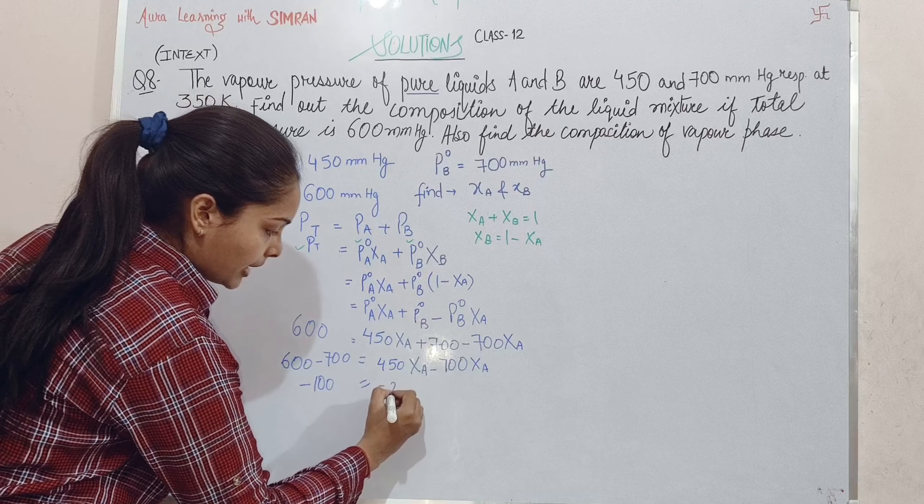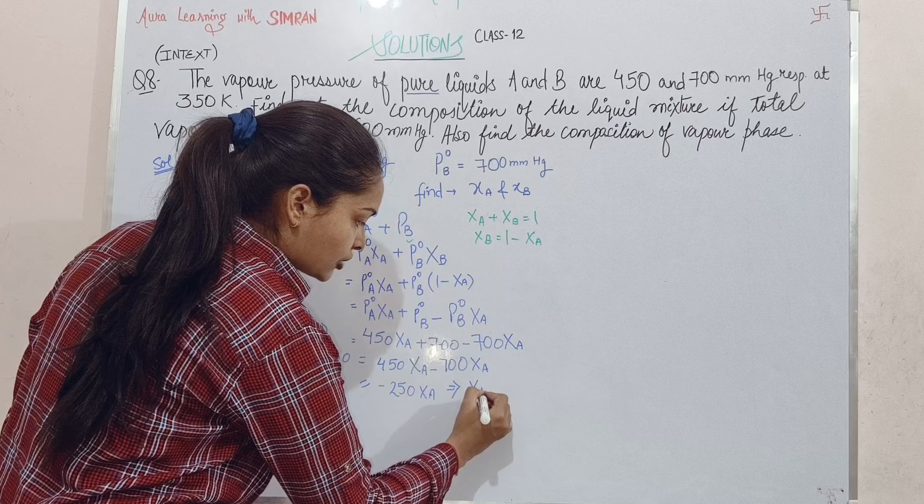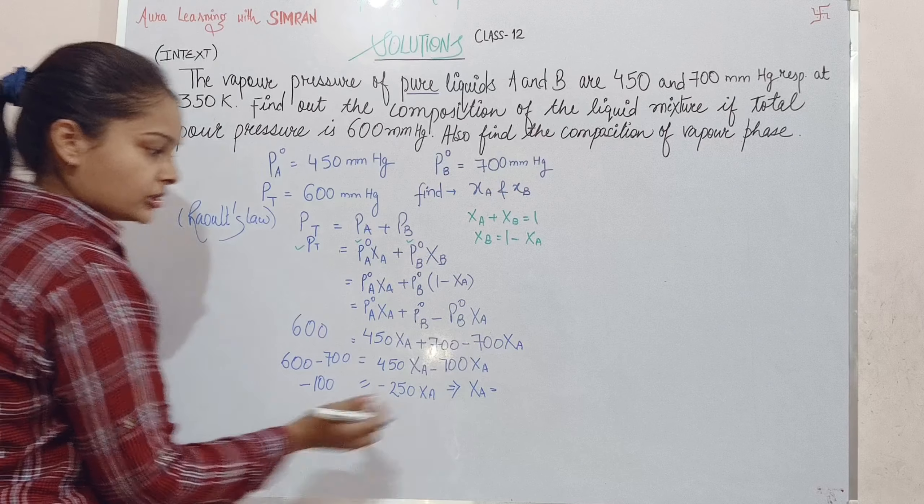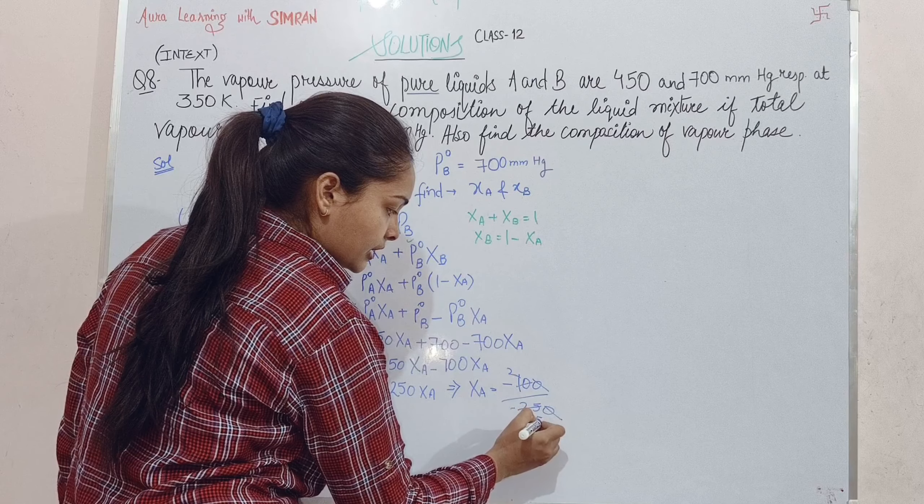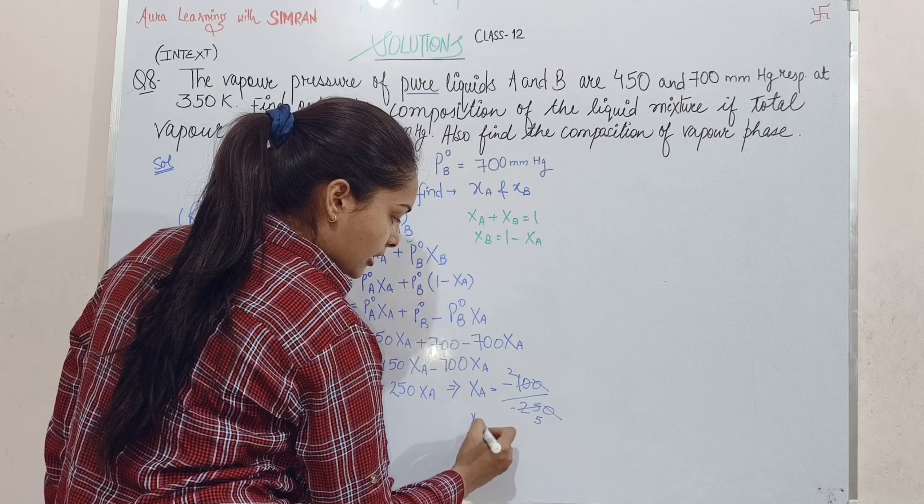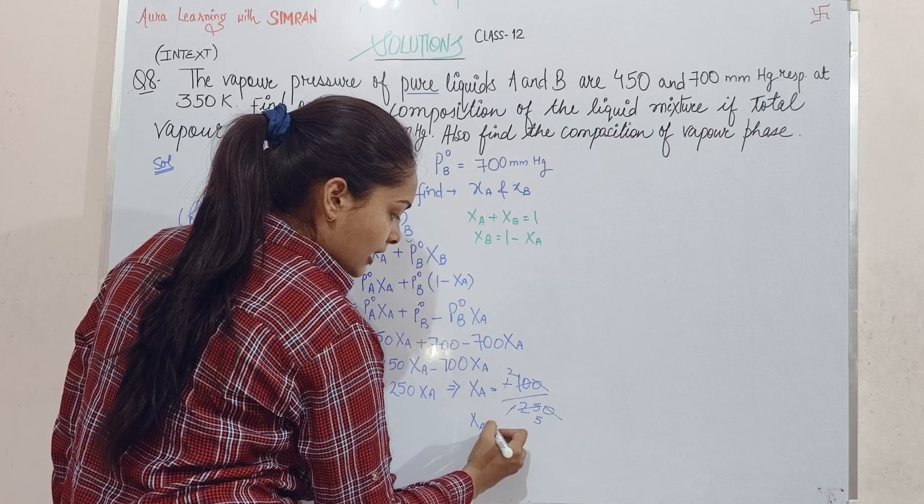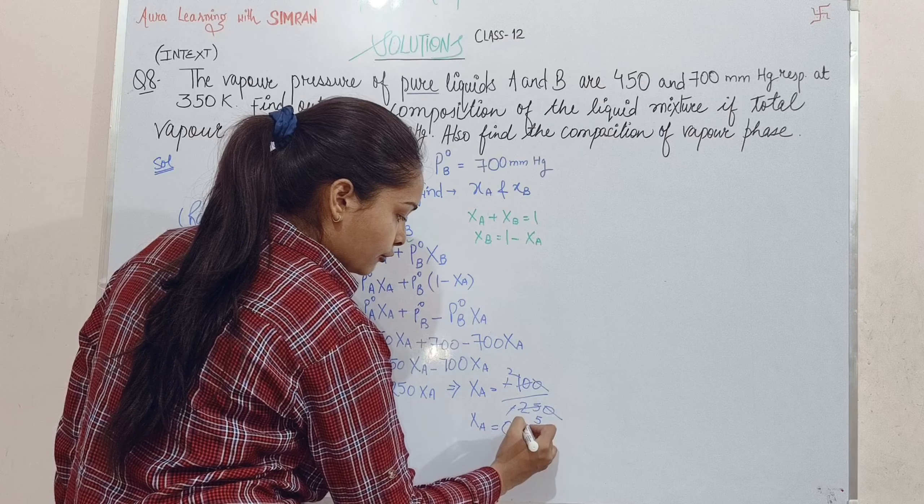χA equals negative 100 divided by negative 250. Canceling zeros: 1 over 2.5. χA equals 0.4.